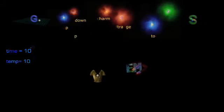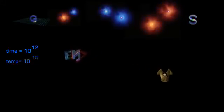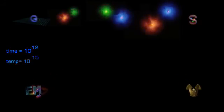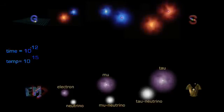At 10 to minus 12 seconds and 10 to 15 degrees, the weak force and electromagnetism separate, and we have the four independent forces we know today. At this point, all six types of leptons have formed, including the electron.